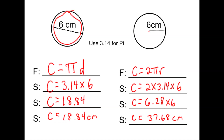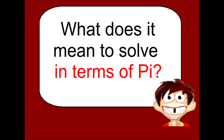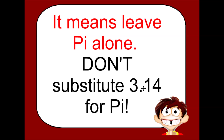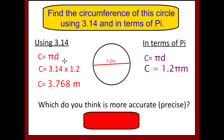What does it mean to solve in terms of pi? When you solve in terms of pi, you don't substitute 3.14 — you just leave pi alone. Here we have a circle with a diameter of 1.2. Using 3.14, the circumference would be 3.768. But solving in terms of pi, we substitute 1.2 and leave pi untouched, giving a circumference of 1.2π meters.